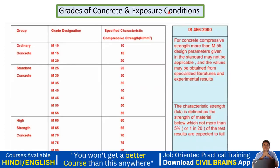Once the design mix concrete reaches the site from the transit mixer, a slump test is performed first, then cube casting is done. The cubes are cured for 28 days and tested. The results are verified against the lab design to confirm the required strength is achieved. For nominal mix, we assume strength is gained; for design mix, we verify it with proper lab tests and cube testing. Coming to grades of concrete: M10, M15, M20 are ordinary concrete; M25 to M55 are standard concrete; M60, M65, M70, M75, M80 are high strength concrete.